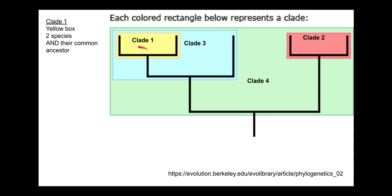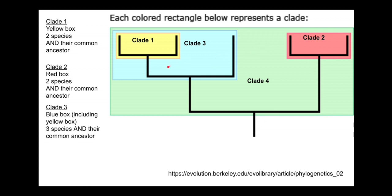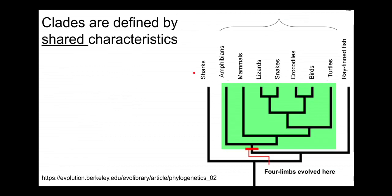Clade one is these two species and their common ancestor. Species one, two, and three and the common ancestor in the blue box, and so forth. If we were to exclude that node we wouldn't properly be defining the clade. In the practice of defining clades, when figuring out trees, we don't know the actual relationships and we have to look at the traits or the characteristics of the organisms.